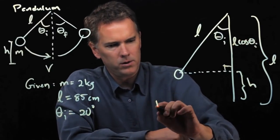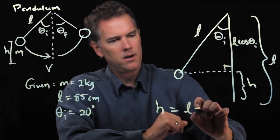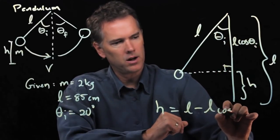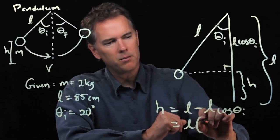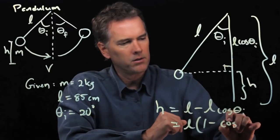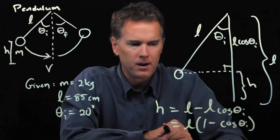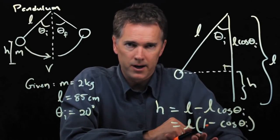So what's h equal to? h is equal to the whole length, l, minus this little section, l cosine theta i. And I can simplify that a little bit. It becomes l times 1 minus cosine theta i. And now we have all those numbers, and we can plug it in and try it out.